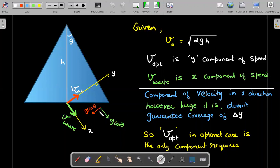I've resolved the acceleration due to gravity along the y-axis as g sin θ in the negative y-direction, and g cos θ along the green direction. V_opt is the y-component and V_waste is the x-component. The component in the x-direction that you're throwing is not going to affect the motion in the y-direction. That's the whole idea of projectile motion.